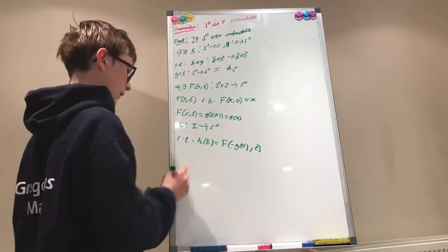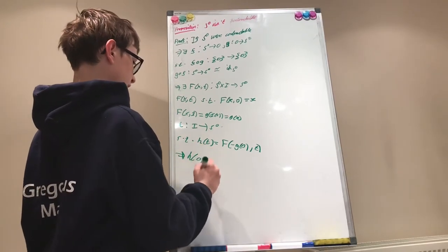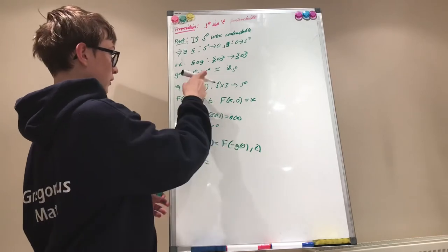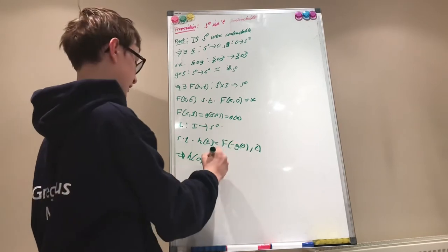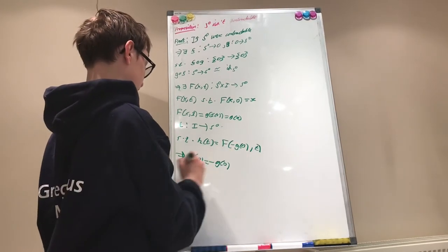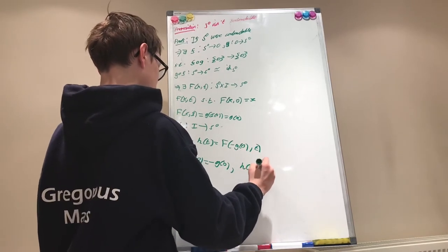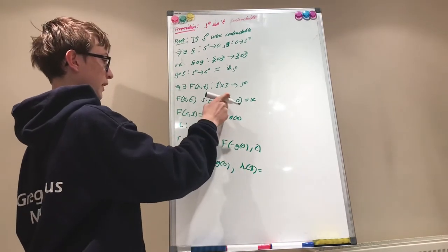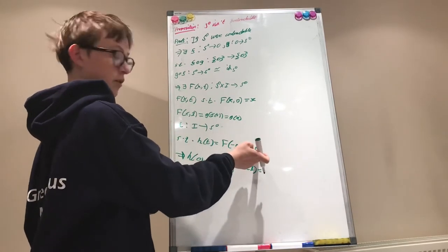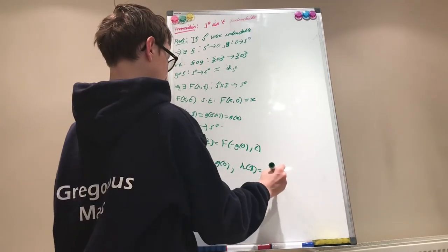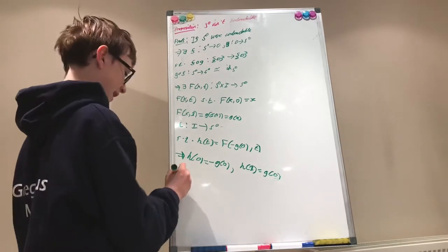Meaning that H(0) — remember F(x,0) = x, so x in this case is negative G(0) — and H(1), well, F(x,1) = G(0). So when we plug in 1 here, it's G(0). Hence we've shown that H is a surjection.